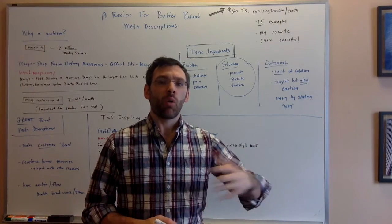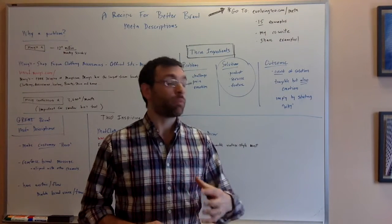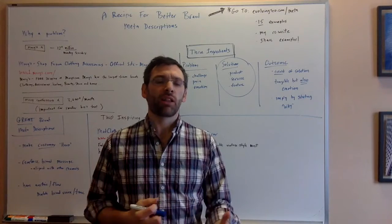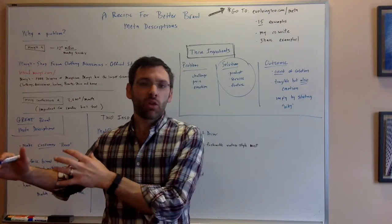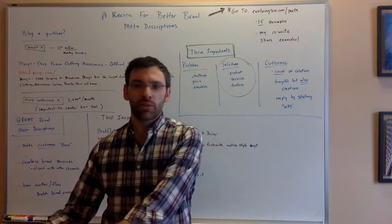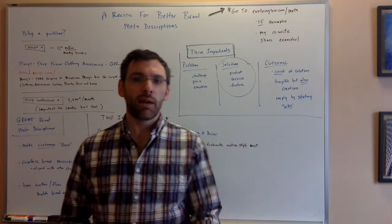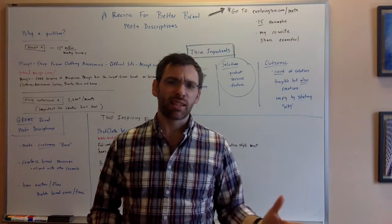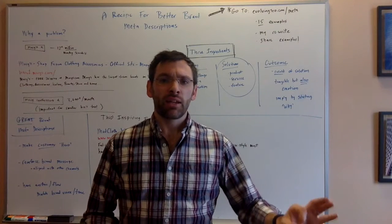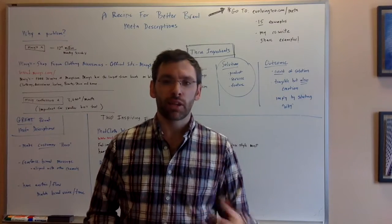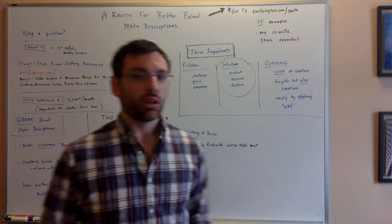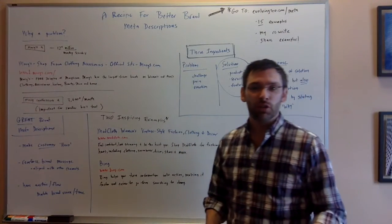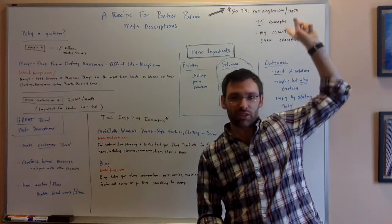How is your solution going to bring the person from the problem to the outcome that they want to achieve? Now, the outcome can be a tangible thing, it can be make more money, make more sales, but you really want to consider including possibly an emotional outcome in this. Feel better, feel less frustrated, feel more confident, and you're going to see some examples here and at the 15 examples at evolvingseo.com/meta. You can also take the approach of implying the outcome by stating maybe what you believe. So think Simon Sinek's talk about why.